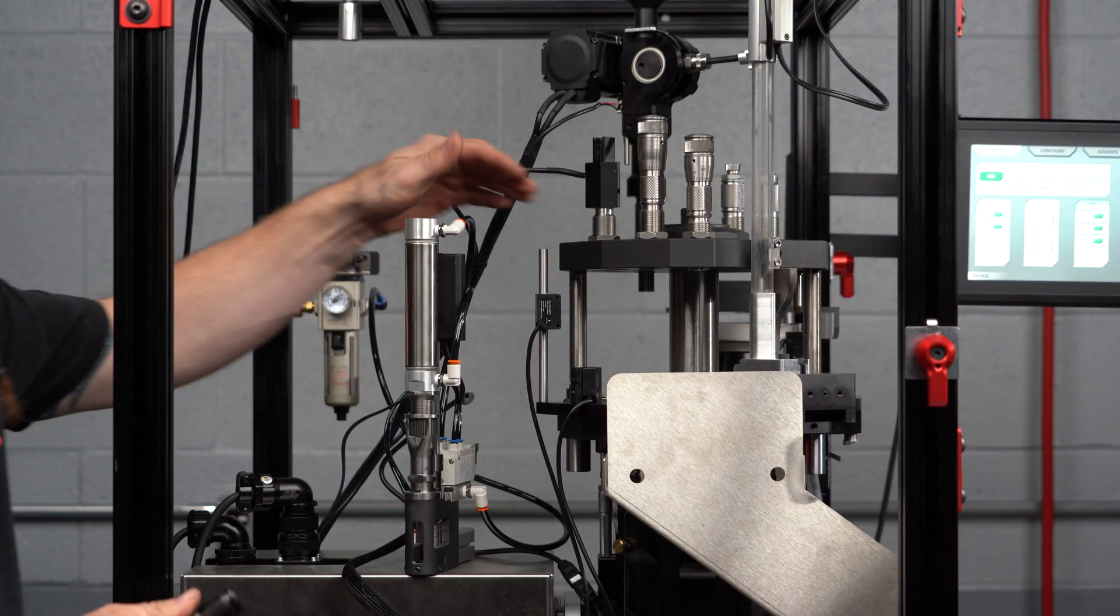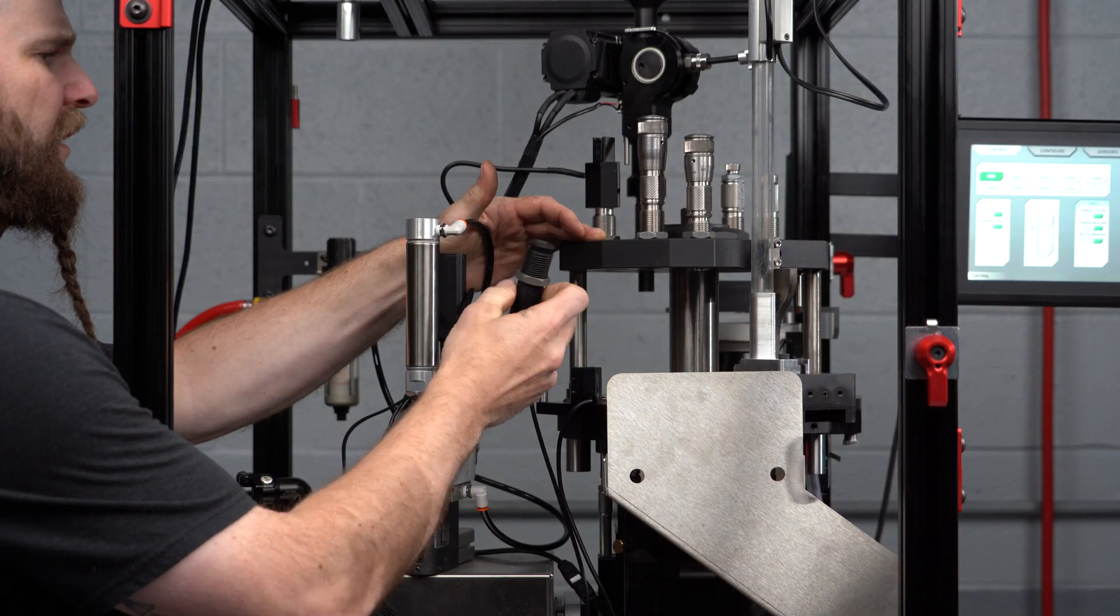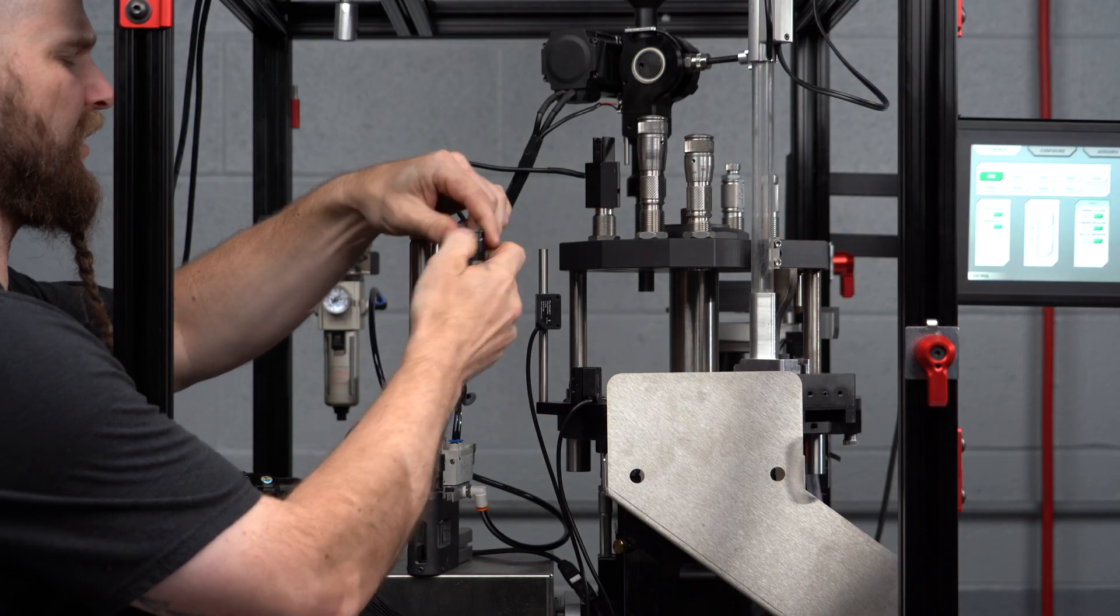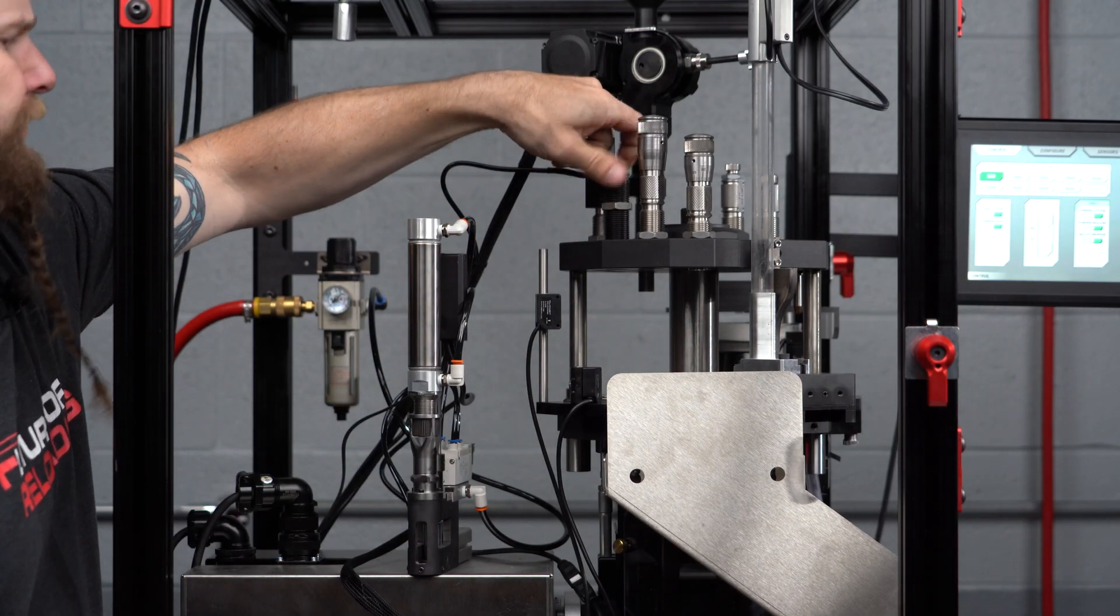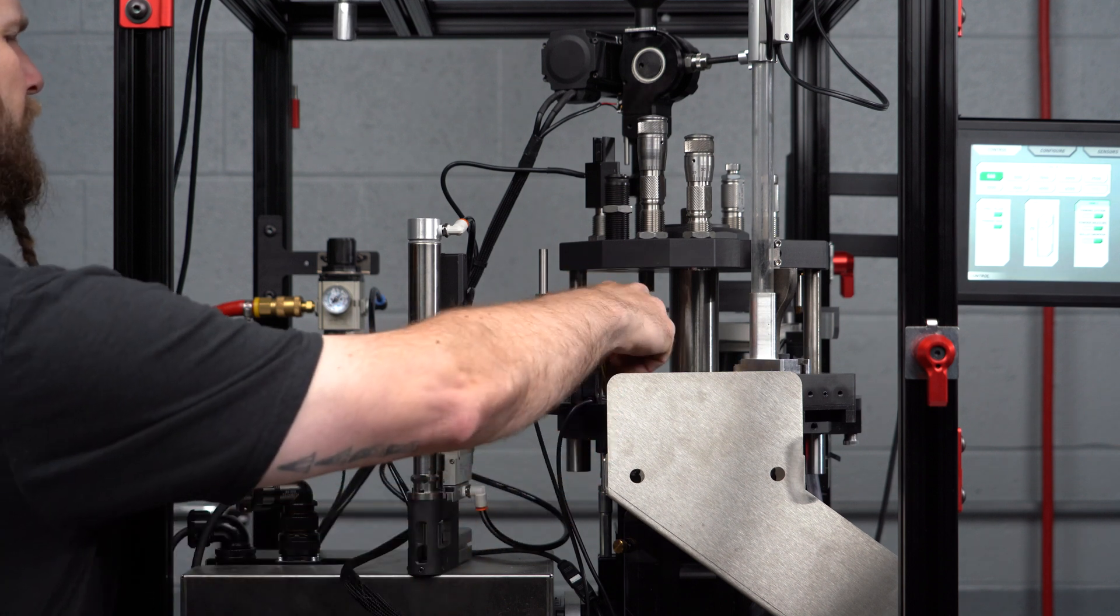Moving on to setting our pneumatic bullet dropper, we're going to start with our die. This is a 338 die in my hand, which is denoted by the number 8 engraved on the side. We're going to start by threading it in just a little bit. We're going to take an appropriate case, 338 Lapua Magnum, place it underneath the die and perform a move to bottom.